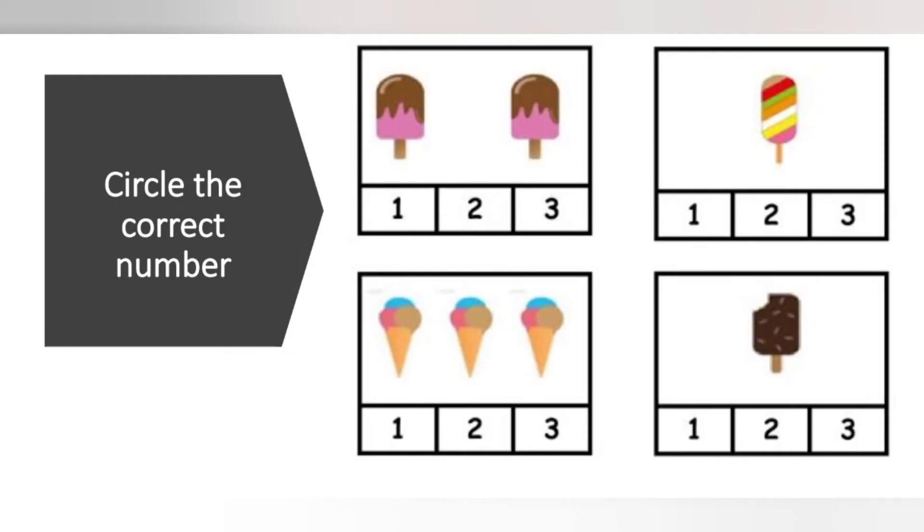Now, circle the correct number. So kids, now we have M&Ms: 1, 2. We circle number 2. Right?